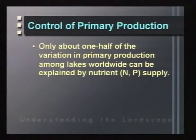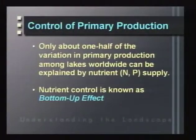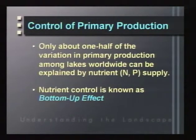How do we control primary production in ecosystems? Only about half of the variation in primary production seen across lakes worldwide can be explained by nutrient supply. The nutrient control is known as the bottom-up effect — controlling ecosystem structure through food resources and energy sources at the base of the food web.